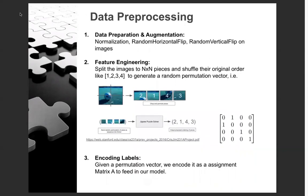We begin talking about our approach. In the data preprocessing part, we perform augmentation techniques. For each image, we randomly permute the n-by-n pieces to get a new image and feed into the model. We encode labels as permutation vectors and their corresponding assignment matrices.